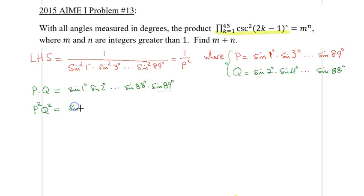So sine 1 degrees times sine 89 degrees times sine 2 degrees paired with sine 88 degrees, and so on, all the way to sine 89 degrees paired back with sine 1 degrees. And that's perfect, because now I just realized that sine 89 degrees here is just cosine 1 degrees, and so on. So sine 2 degrees times cosine 2 degrees, all the way to sine 89 degrees times cosine 89 degrees.